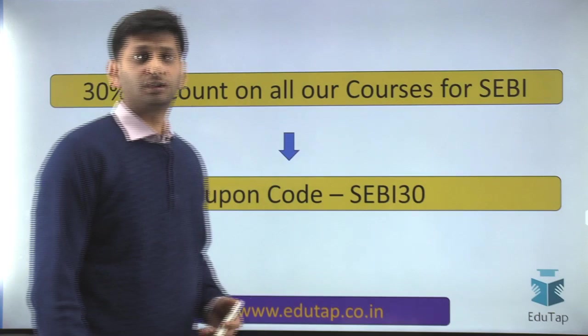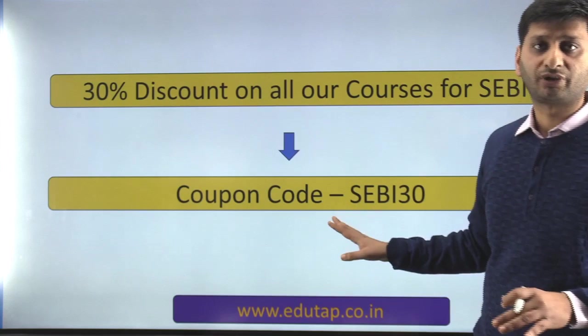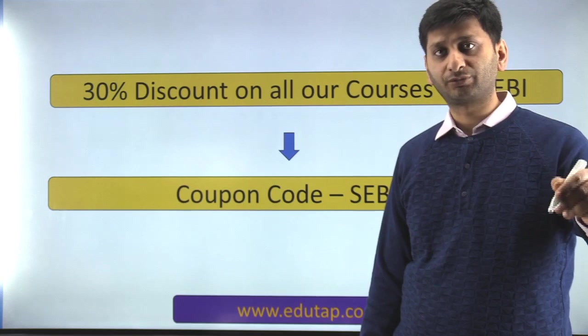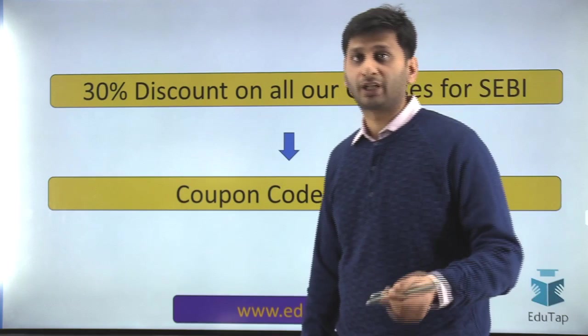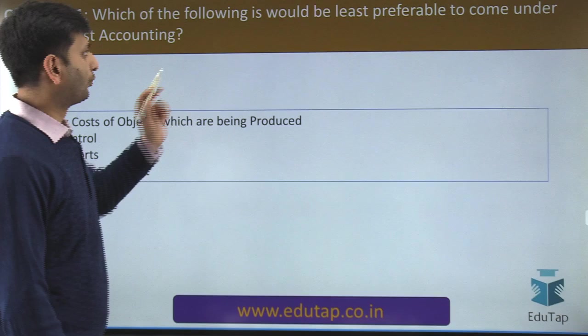Before I start, I just want to tell you that in case you want to enroll into some of our courses, there is a 30% discount on all courses — for CB individual or combo courses with RBI — you can use the coupon code CB30. The details of all these courses are given in the description link of this video, so you can click on those links and read about the details in case you are planning to enroll.